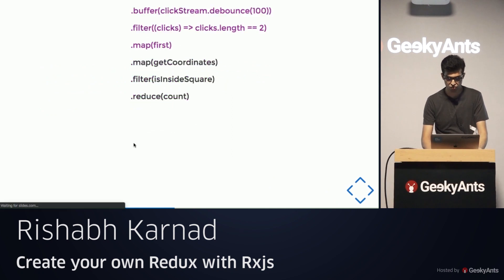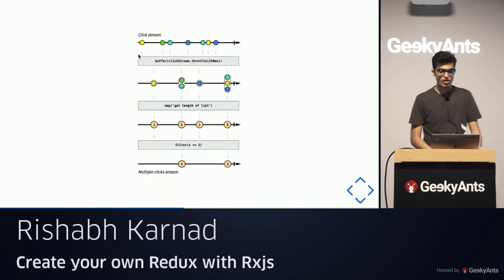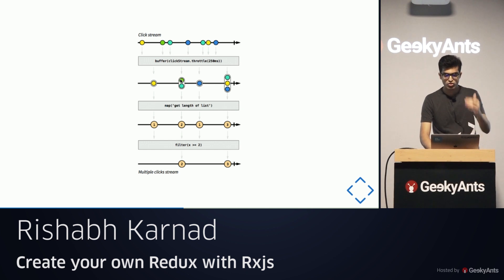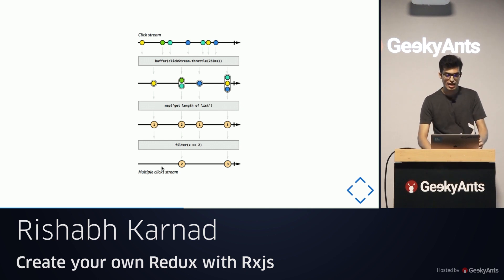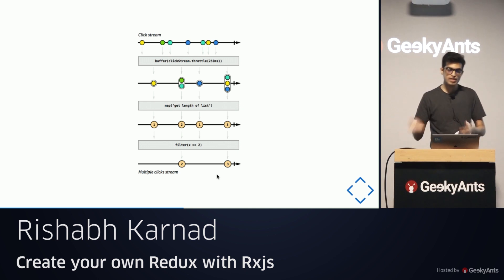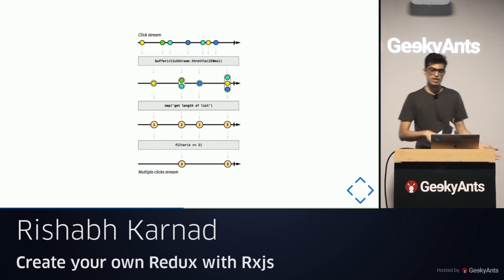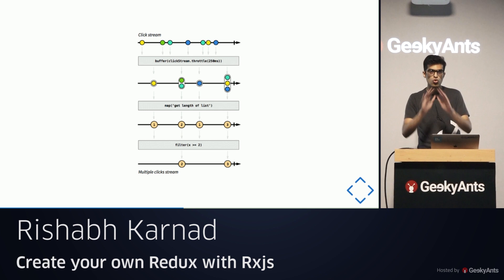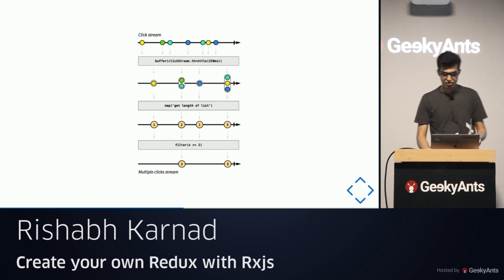Visualizing this: the initial click stream gets buffered into groups, filtered to only pairs, and the result is a new observable stream you can deal with just as before. This makes it easy to add additional functionality while keeping the code readable — which is the main thing to convey about reactive programming.